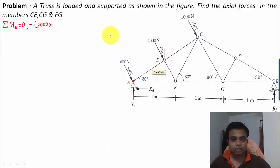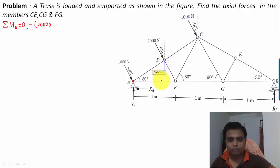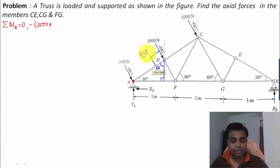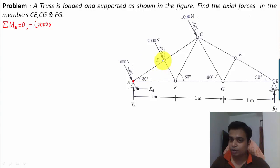To find the perpendicular distance AD: drop a line from point D. The angle at that junction is 90°. Since the line makes 30° and the supplementary arrangement gives 60°, the angle at D is 90°, confirming AD is the perpendicular distance from the line of action of the 2000 Newton force.